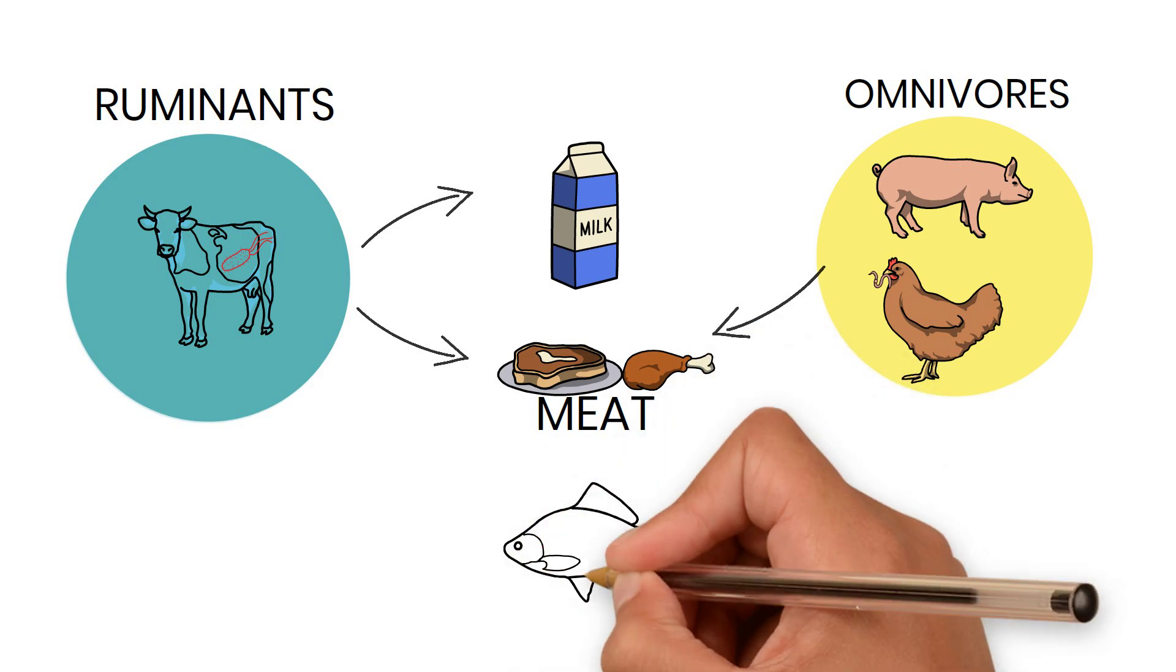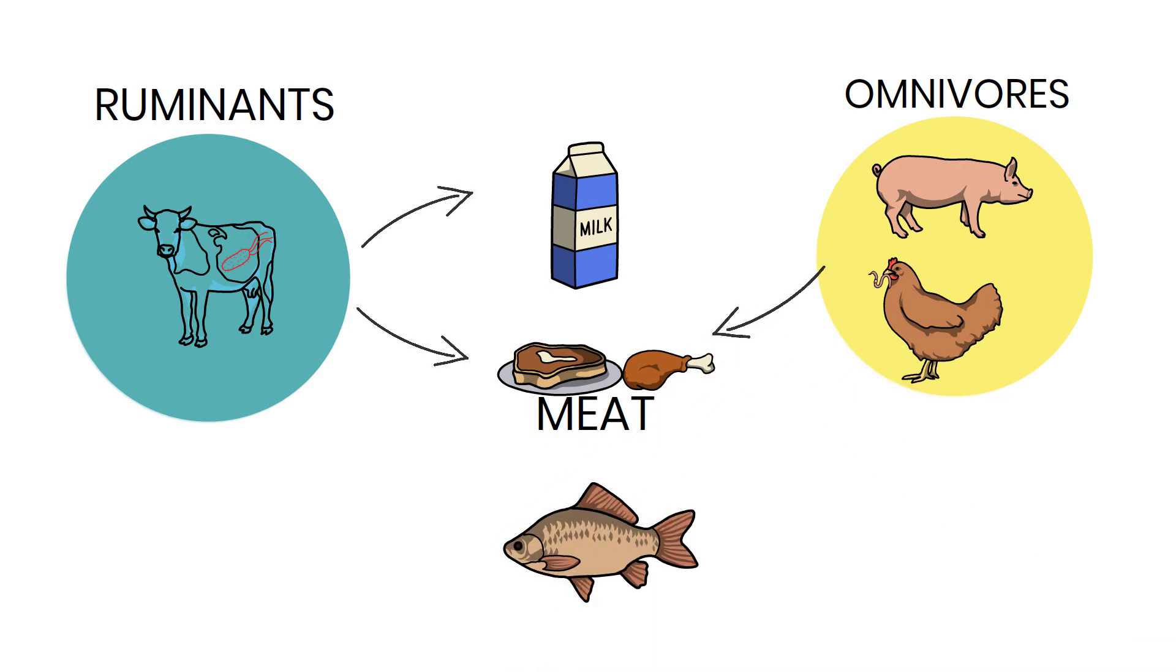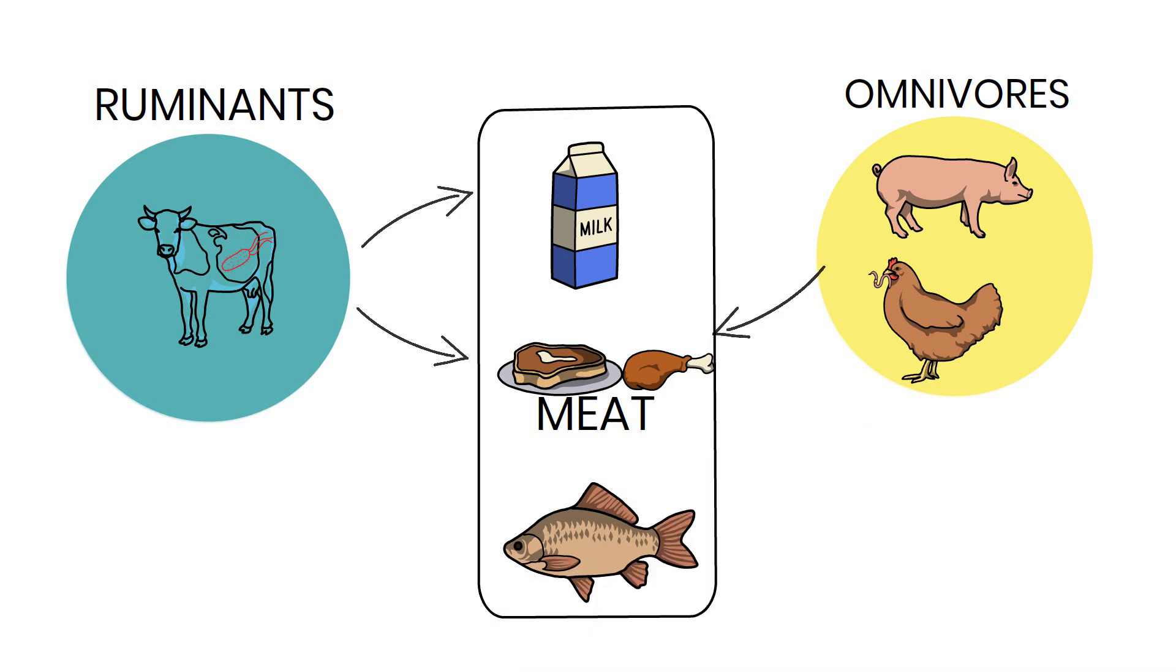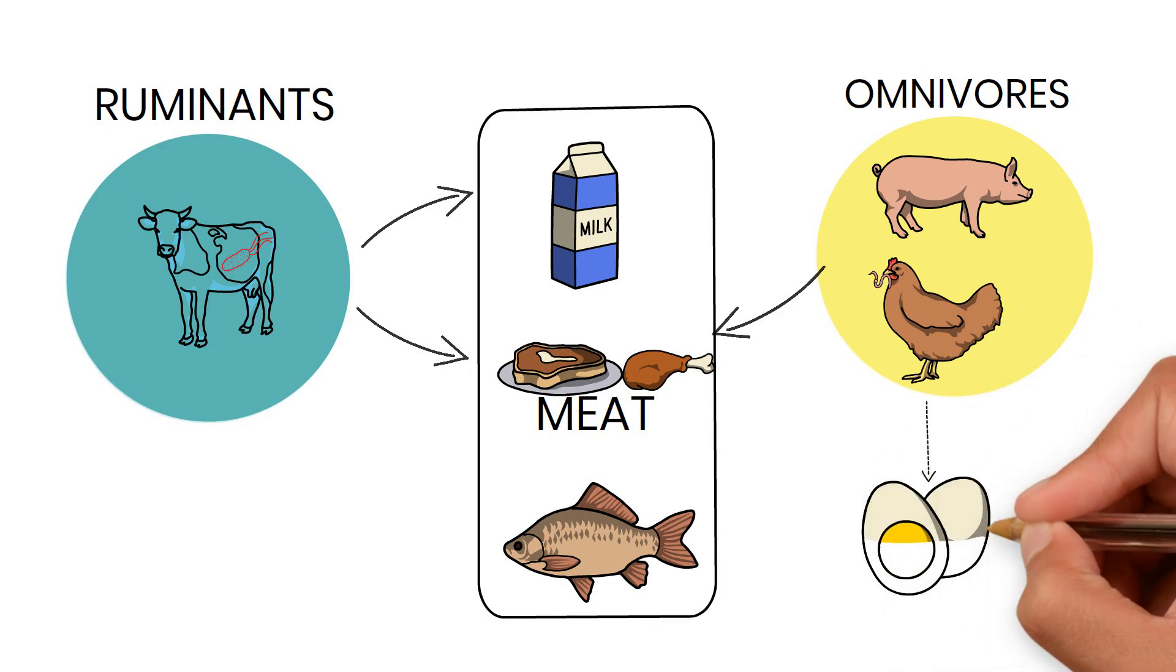And fish get B12 by eating plankton, so milk, meat, and fish are the main sources of B12, and it is present to a lesser extent in eggs.